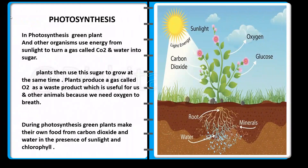Photosynthesis — what is photosynthesis? In photosynthesis, green plants and other organisms use energy from sunlight to turn a gas called CO2 (carbon dioxide) and water into sugar. Plants then use their sugar to grow.